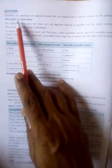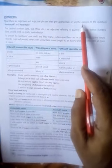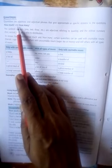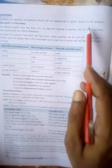First we have to understand what is quantifiers. Quantifiers are adjectives and adjectival phrases that give approximate or specific answers to the questions how much and how many.